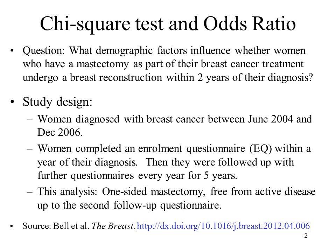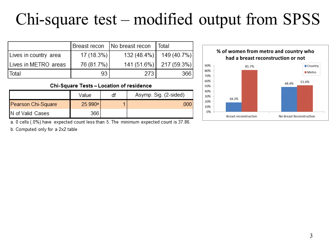This research has been published by Robin Bell in the Breast Journal. Here is some modified output from SPSS. You've got a 2x2 table and the chi-squared test.